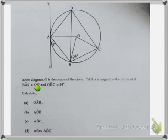Angle BAS is 40 degrees and OBC is 54 degrees. Calculate part A: angle OAB.